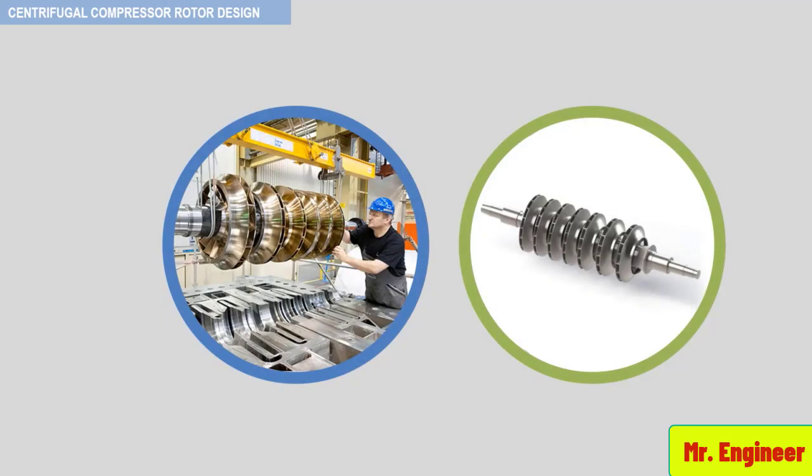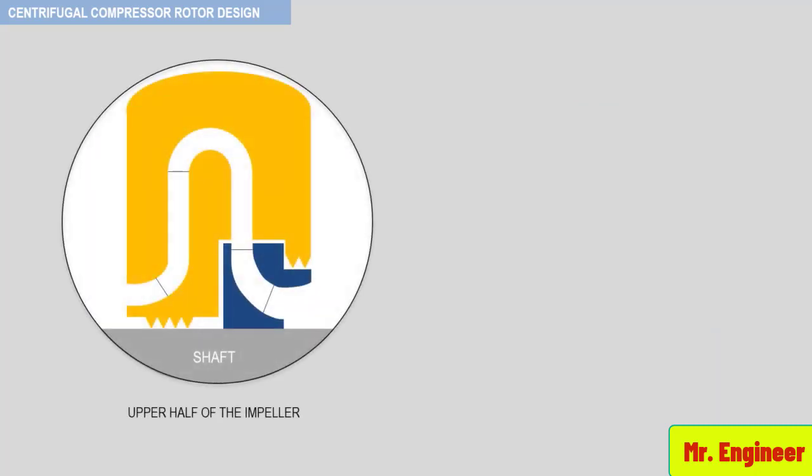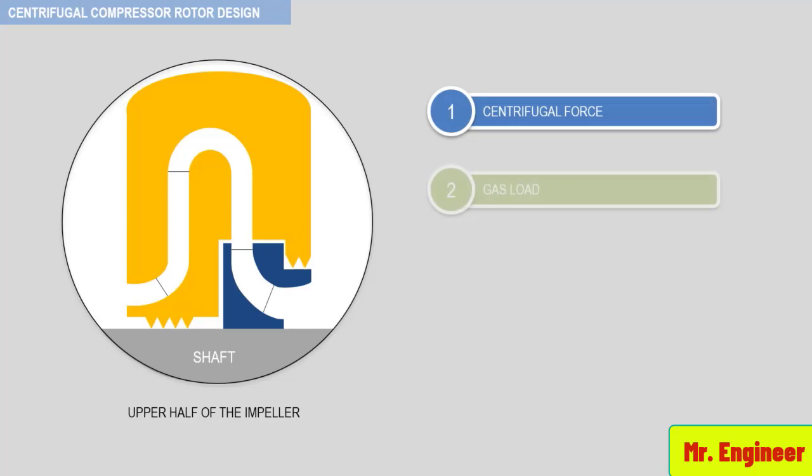All centrifugal compressor rotors are built-up type. That is, the major components are not integral with the shaft and must be shrunk on. So let's see in detail the requirements for impeller shrink fits. The forces acting on an impeller that create impeller stress and require positioning stress or shrink fit are centrifugal force, gas load, the force from the torque.